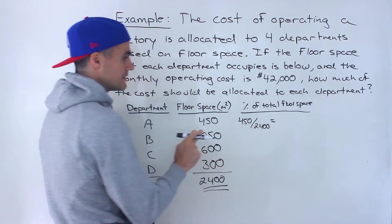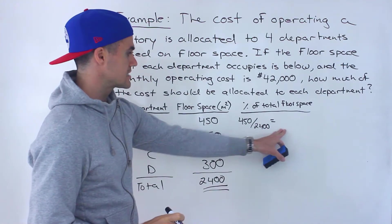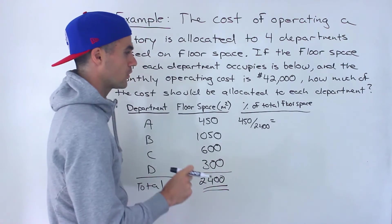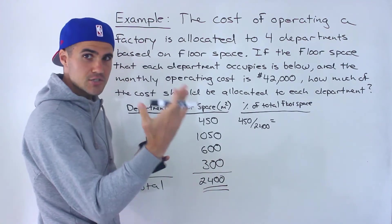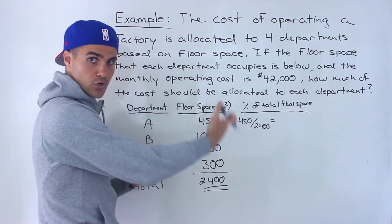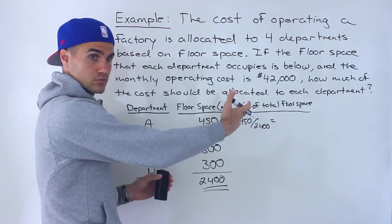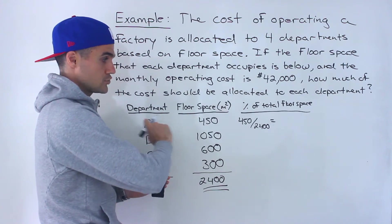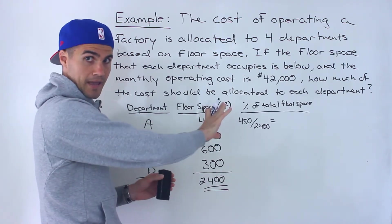I think if you divide these, you would get a terminating decimal. So I think this one would be like 0.1875. And if it's a terminating decimal, that's fine. But a lot of times the decimals aren't going to terminate. They're going to continue to expand infinitely.